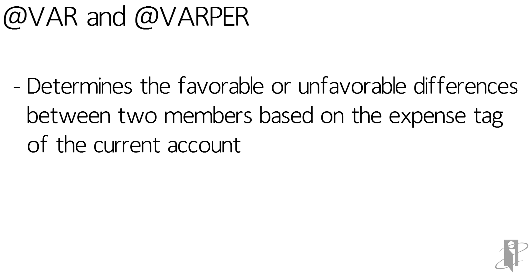For example, on revenue you generally want actual to be higher than budget. So if you budget $500 and you have $1,000 in actual, you're $500 positive. On the other hand, for expenses, if you budget $500 and you spend $1,000, you're $500 to the negative — you spent $500 more than you were hoping to.